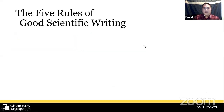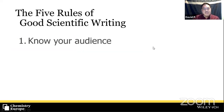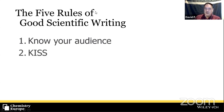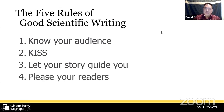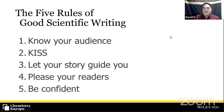What are the five rules? We'll go straight to the point. The first rule is knowing your audience. The second rule is KISS — K-I-S-S. The third rule is let your story guide you. The fourth rule is to please your readers. And the fifth rule is to be confident. Let's go through the rules one by one.